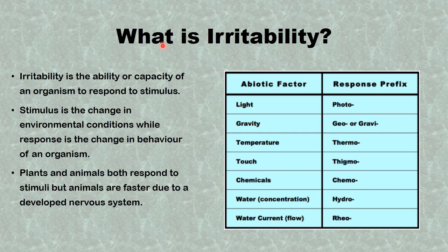Now we'll be looking at the concept of irritability. Irritability is the ability or capacity of an organism to respond to a stimulus. It is one of the characteristics of living things. Stimulus is the change in environmental conditions, while response is the change in behavior of an organism. Plants and animals both respond to stimuli, but animals are faster due to a well-developed nervous system.